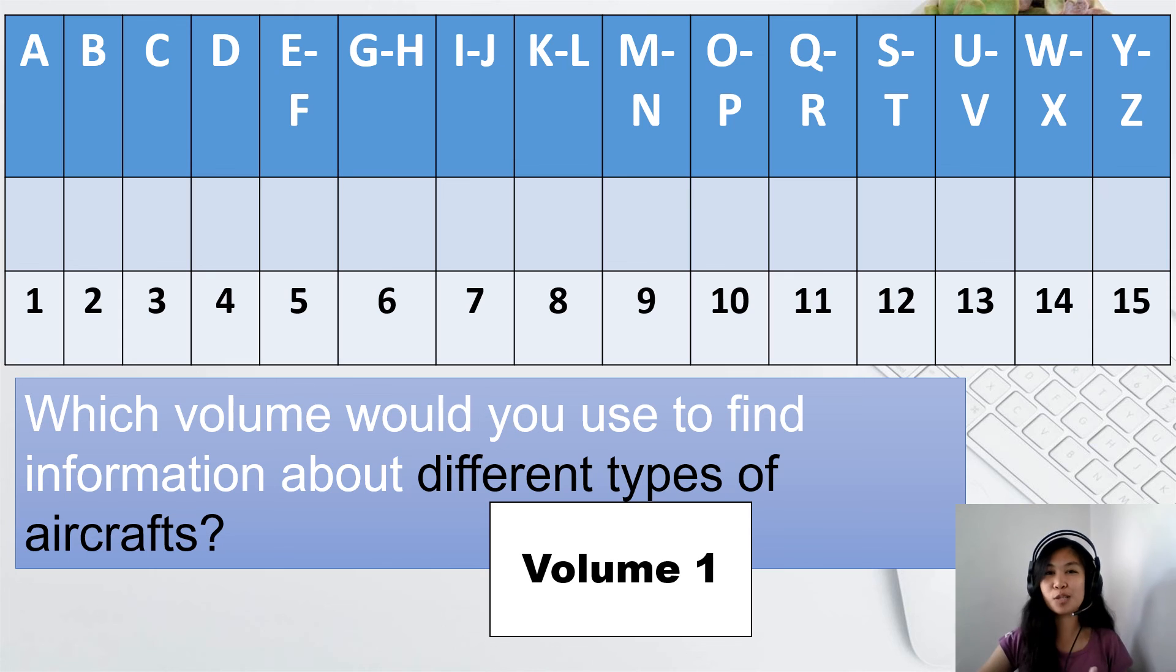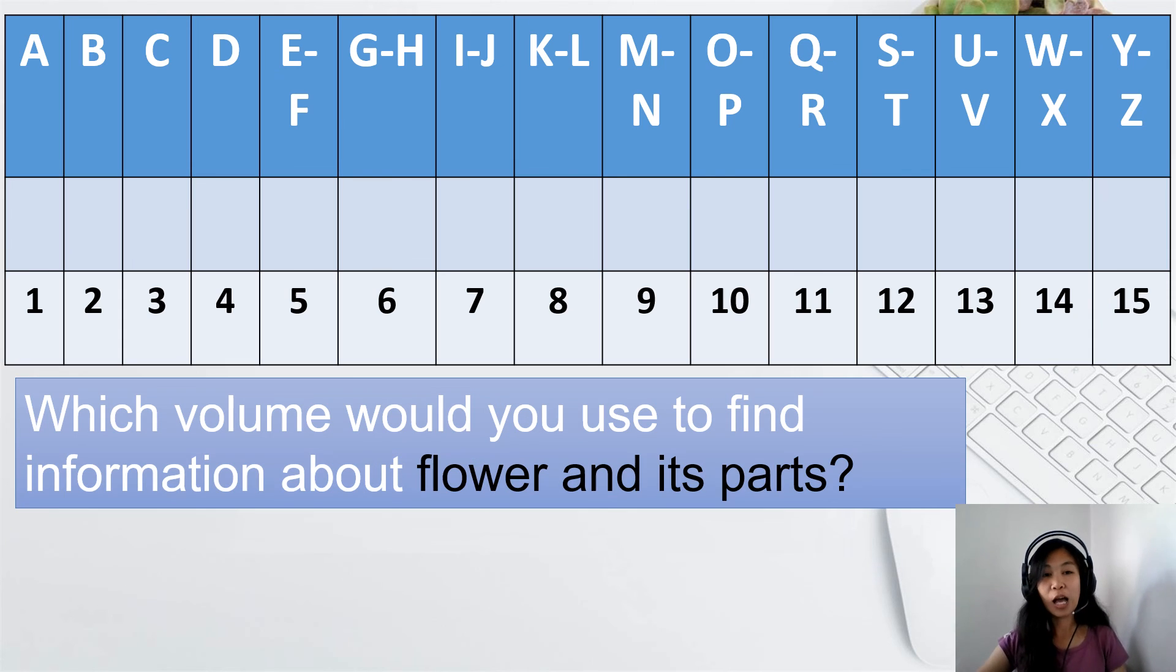How about the last one? Number 5. Which volume would you use to find information about flower and its parts? Again, volume number 5. Very good. Why? Because flower starts with letter F.